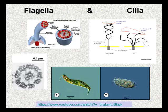Microtubules also compose the major components of flagella and cilia, which are structures that enable a cell to move. The flagella is a long hair-like structure that extends from the plasma membrane and enables an entire cell to move — some cells may have just one or multiple flagella. Cilia are short hair-like structures that move entire cells or substances along the cell's outer surface, and can extend along the entire plasma membrane surface.